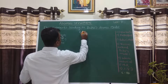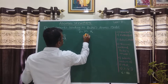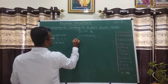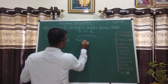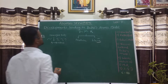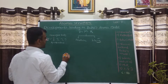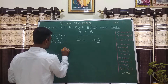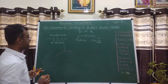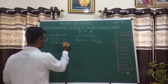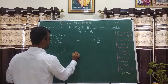Electromagnetic radiations have dual nature — that is, both the character of particle as well as wave. When charged bodies are accelerated, they produce electric as well as magnetic fields in the surrounding area, and these fields are transmitted in the form of waves in mutually perpendicular directions. Let's say this is the charged body; this is the z-axis, this is the y-axis, and this is the x-axis.